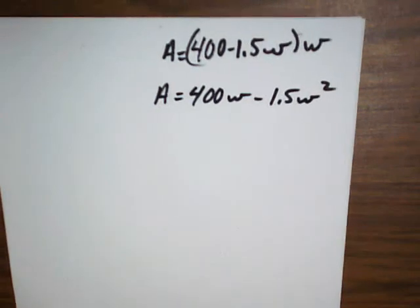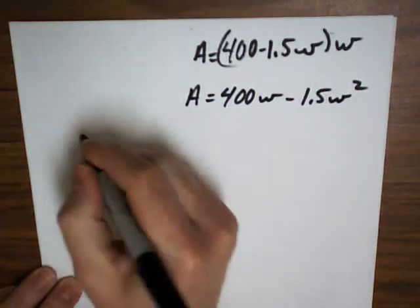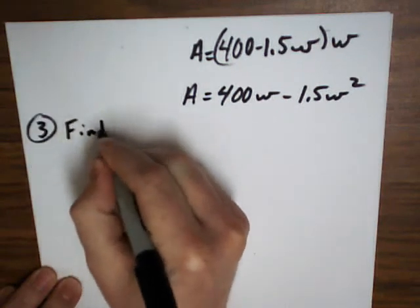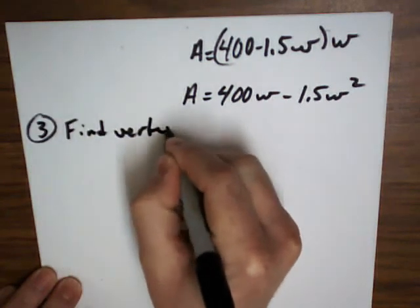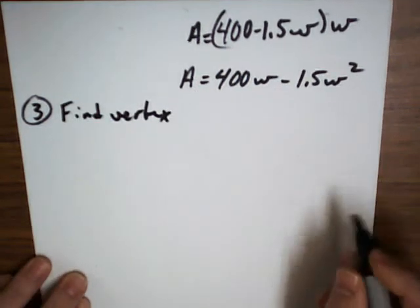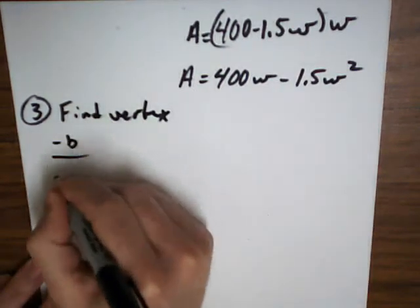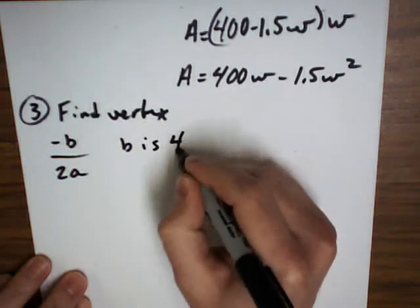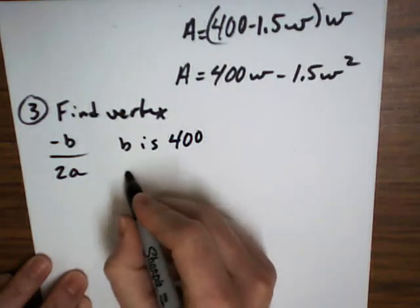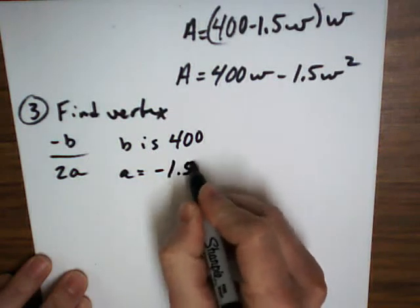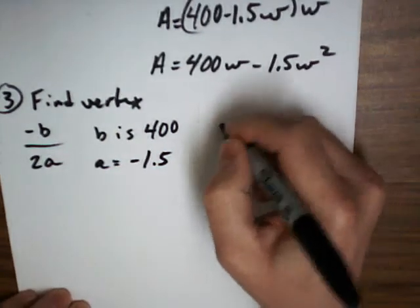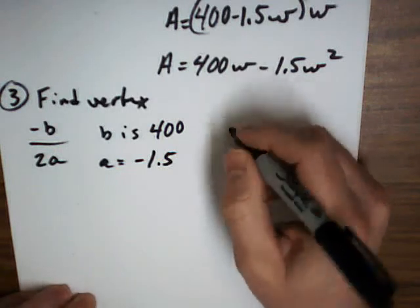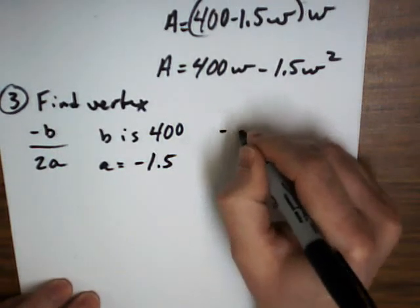Now, you want to maximize this equation. You want to find the vertex. So, negative B over 2A. What's your B value? 400. And your A? You sound so happy when you said those two numbers. I'm happy too.